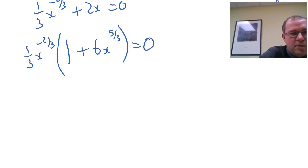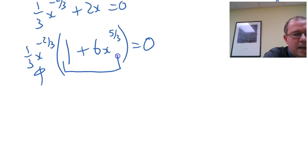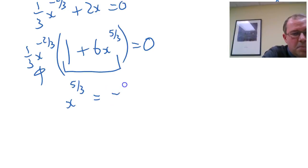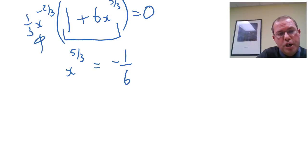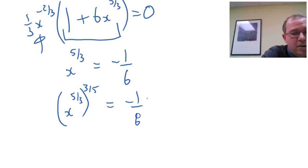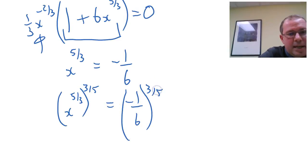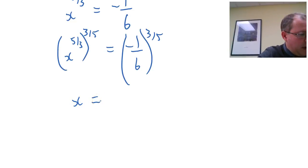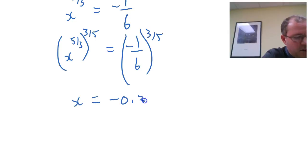There I've got it equal to zero. This bit is the undefined part, so I'll set the bracket equal to zero. Setting that bracket equal to zero gives me x to the power five thirds equals minus one sixth. Now five thirds is a one-to-one function, so I can undo it by raising both sides to the power three fifths. I'll raise both sides to the power three fifths, and we'll get another critical point, so x equals minus 0.341.